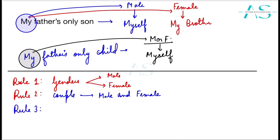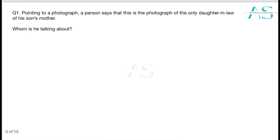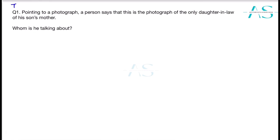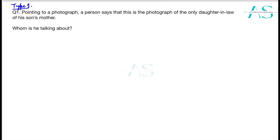We'll discuss Rule 3 with the help of questions. Let's look at Type 1 questions. The approach for this type is: start from the last part and break the question into small snippets. For example — 'his son's mother' — can we call this 'his wife'? Yes, we can simplify that part and move on to the next part.